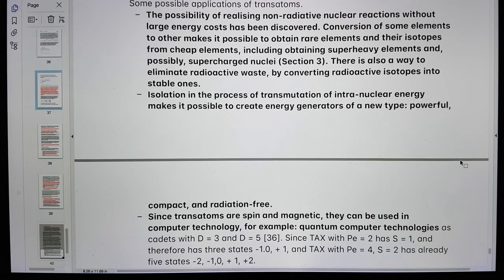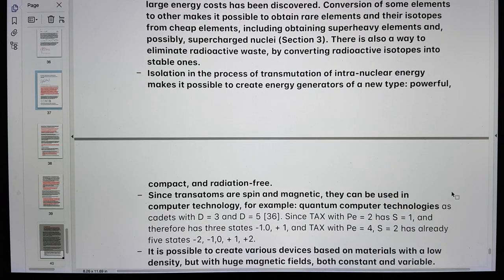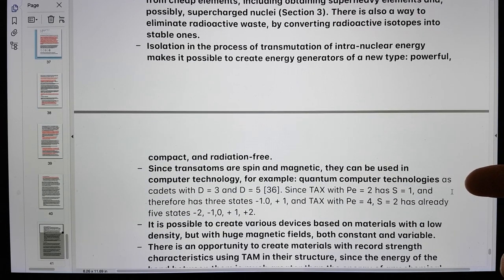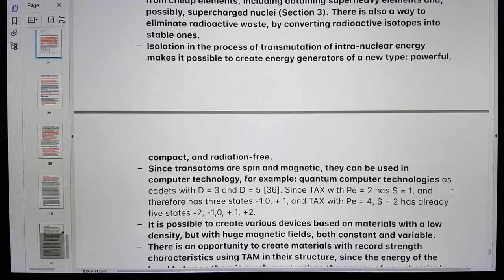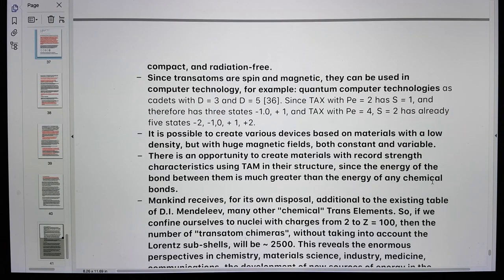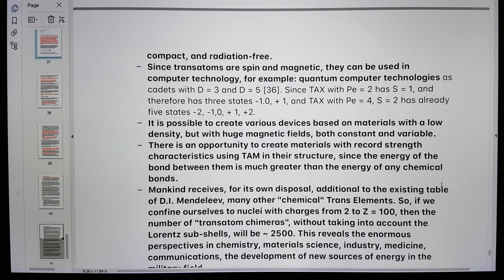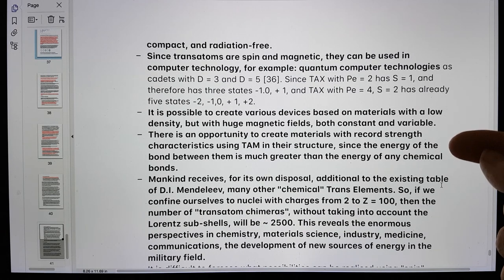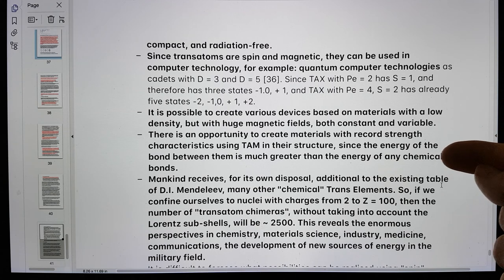Since transatoms are spin and magnetic, they can be used in computer technology, for example, quantum computing technologies. It is possible to create various devices based on materials with a low density, but with huge magnetic fields, both constant and variable. There is an opportunity to create materials with record strength characteristics using TAM in the structure, since the energy of the bond between them is much greater than the energy of any chemical bond.